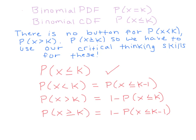Binomial PDF gives the probability of something happening exactly a certain number of times — for example, exactly eight times in 100 trials. There are no calculator buttons for less than, more than, or greater than or equal to directly. So when those come up, we have to use critical thinking and rework the problem in terms of a less than or equal to form.